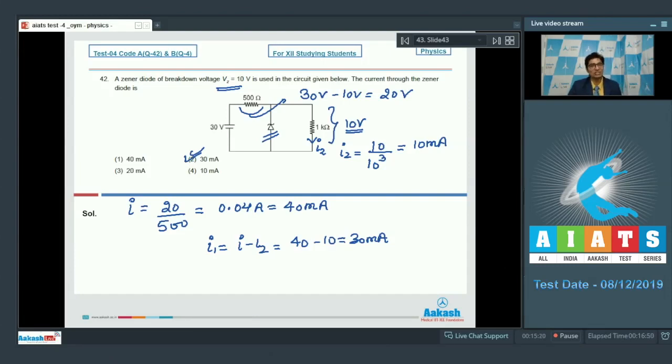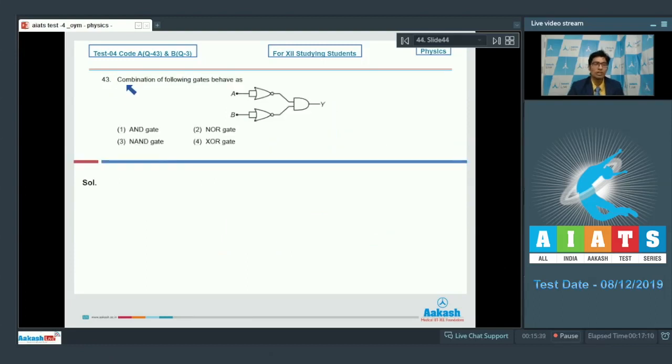Let us proceed to question number 43. Question number 43 says combination of following gates behave as. To solve this question, let us draw the truth table for this particular combination of logic gates. When A is 0 and B is 0, Y has an output 1.